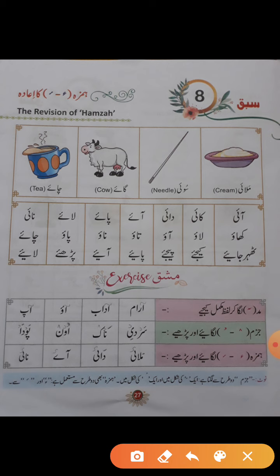آئیے، پڑھئے اور لائیے۔ اب اس کے بعد ہم دیکھیں گے اس کا ایکسرسائز۔ اس میں آپ کو پہلے حمزہ لگانا ہے، اور مد لگانا ہے۔ جو پہلا والا الف ہے اس پر مد لگایا تو بنا: آرام، پھر آدھا، پھر آو، اور آپ۔